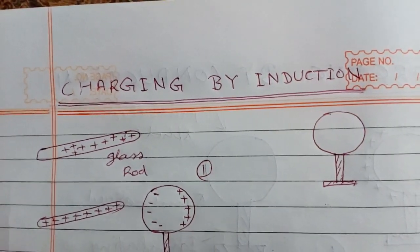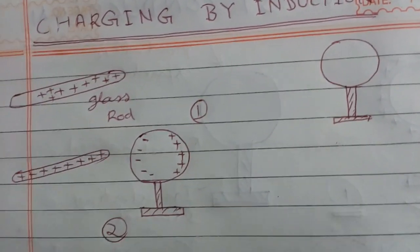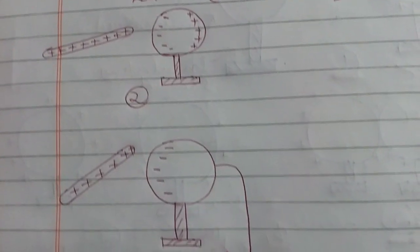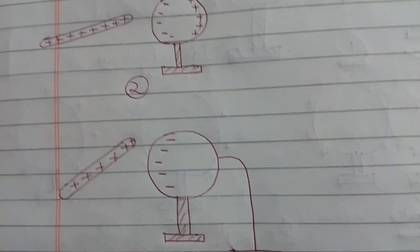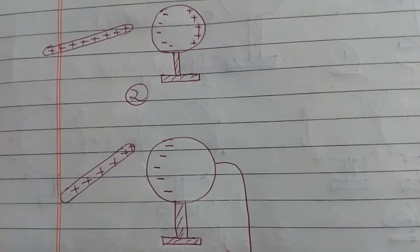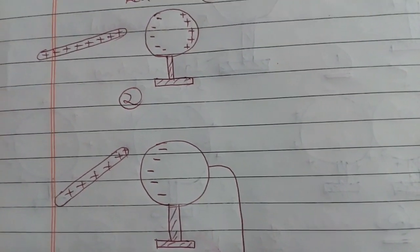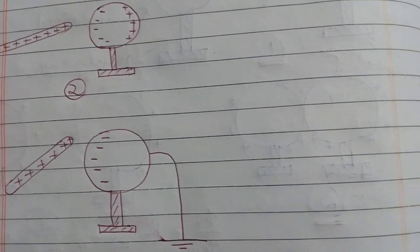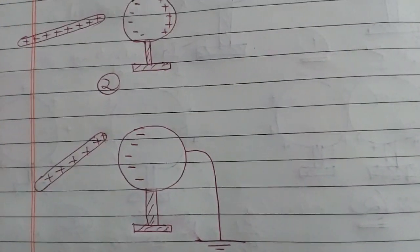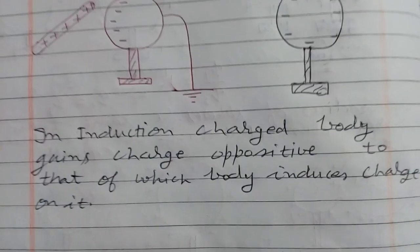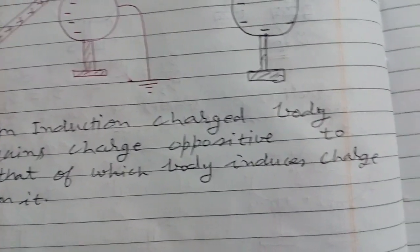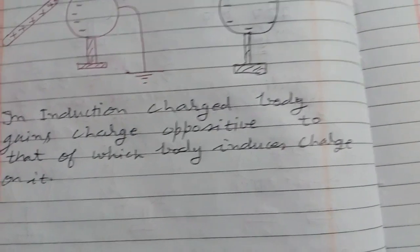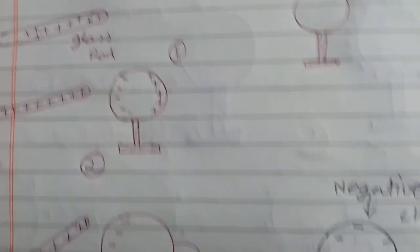Now keeping this glass rod near to the metallic sphere, touch the right-hand side of the metallic sphere by hand, or connect it to the ground with the help of a copper wire. In this way, electrons come from the earth and neutralize this positive charge, so the right side becomes neutral. Then disconnect the sphere from the earth and remove the glass rod. In this way, the metallic sphere becomes negatively charged. It is clear that in induction, the charged body gains a charge opposite to that of the body which induces charges on it.